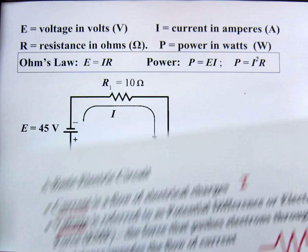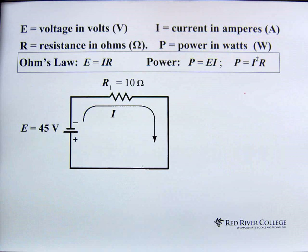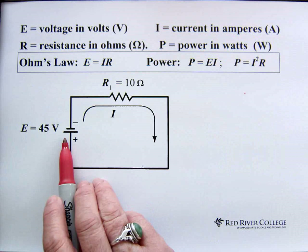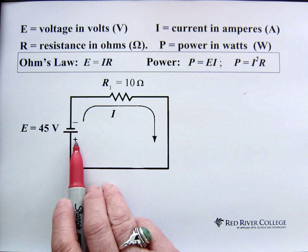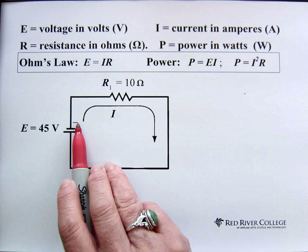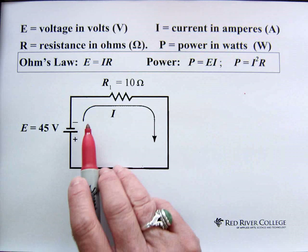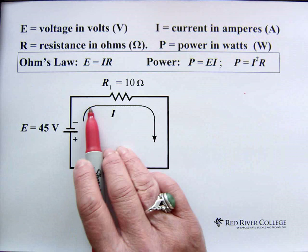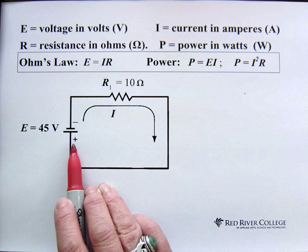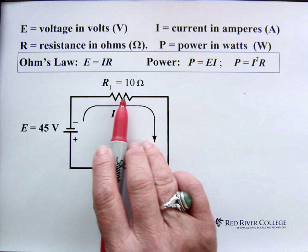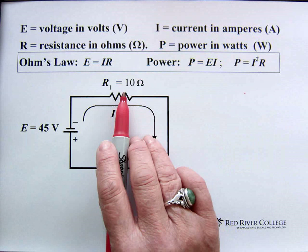Now let's look at the way we show a typical electrical circuit. This symbol represents a battery — here's the positive terminal and there's the negative terminal. The electrons are the ones that move, so they move from the negative terminal to the positive terminal. Here's our symbol for resistance, and we have a resistance in this circuit of 10 ohms.